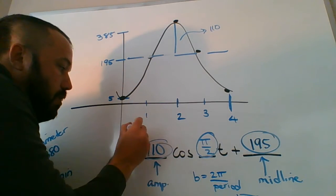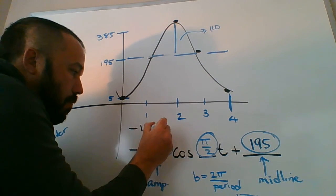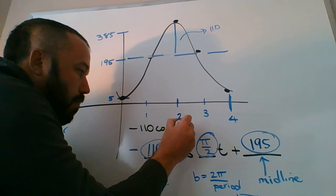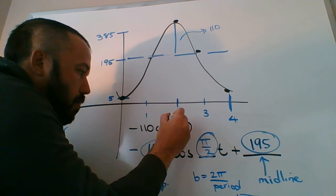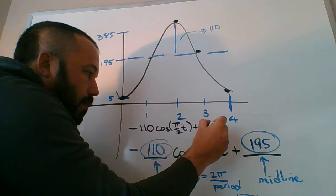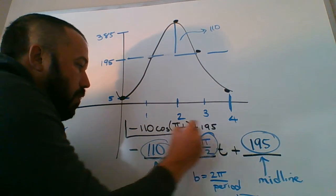So when you write this in, it would be negative 110 cosine π/2 t, and then plus 195. That would be your equation for this one.